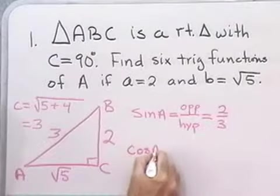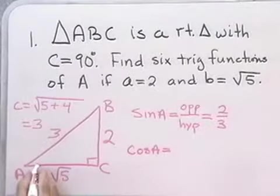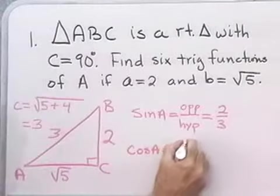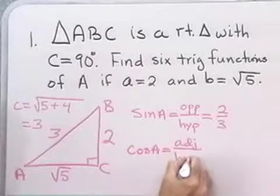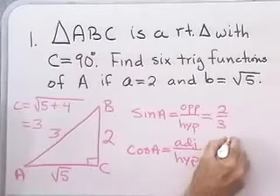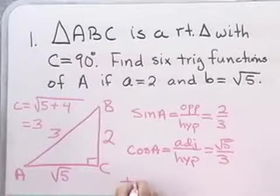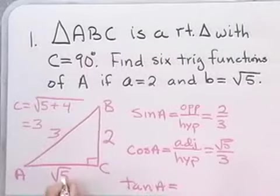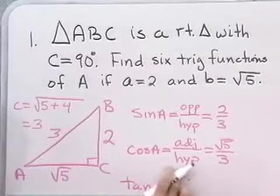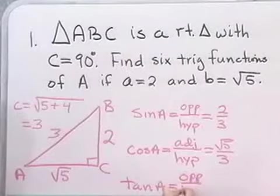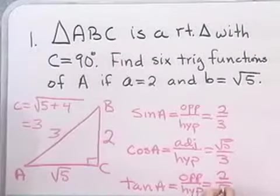Cosine of angle A will be the side adjacent to A divided by the hypotenuse — adjacent over hypotenuse. That gives us 2 over square root of 5.